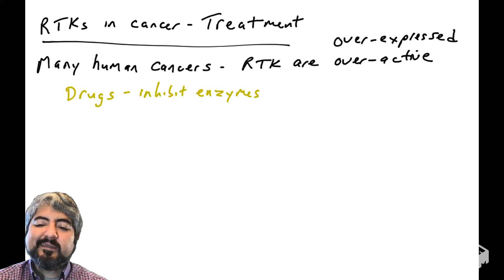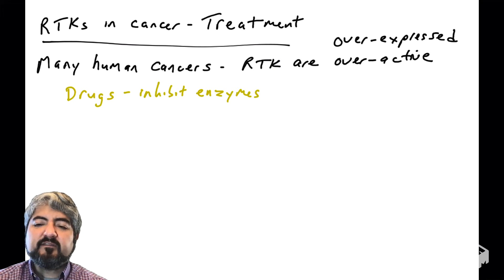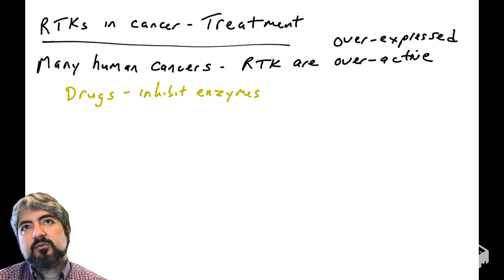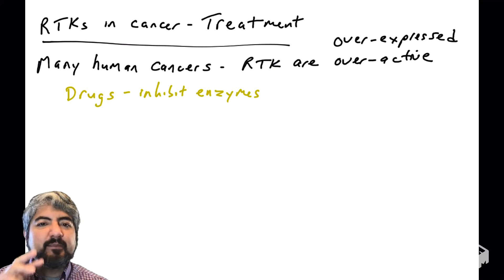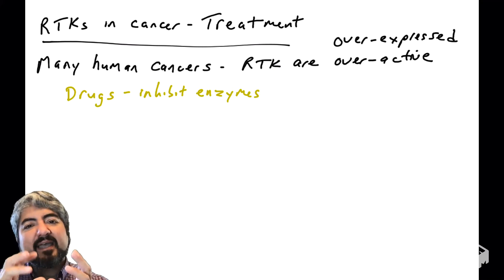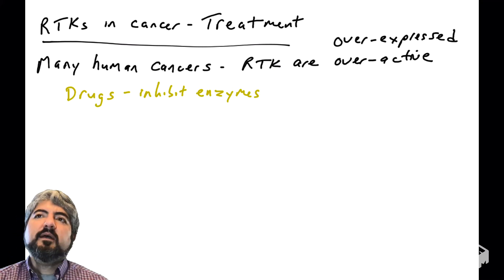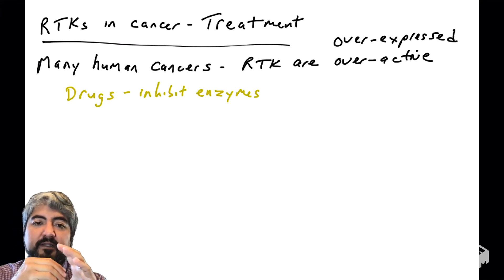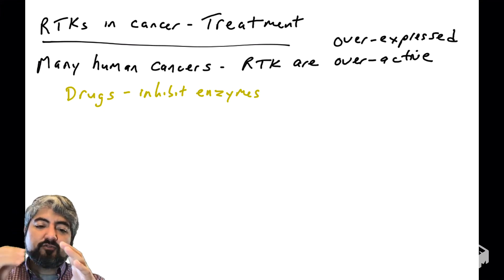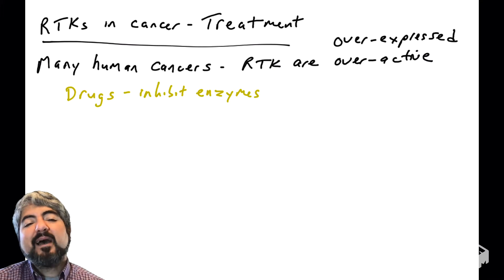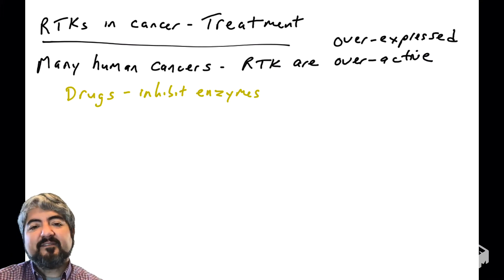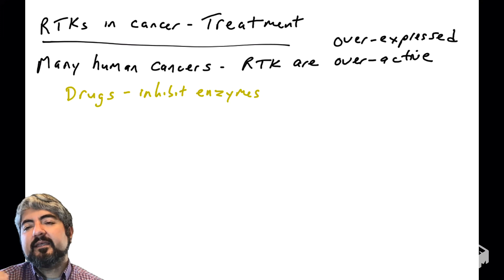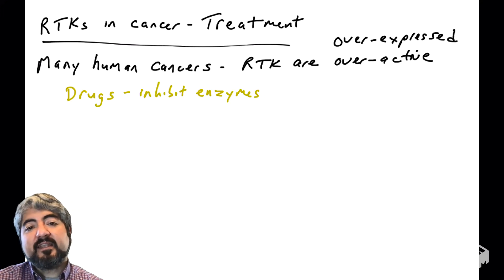Many drugs are enzyme inhibitors. It is fairly straightforward to design a drug that could inhibit an enzyme because enzymes typically have pockets that things fit into, and those pockets can be targeted — drugs could fit in those pockets, bind, and block the activity of enzymes. Hopefully from biochemistry you remember things like competitive and non-competitive inhibitors.